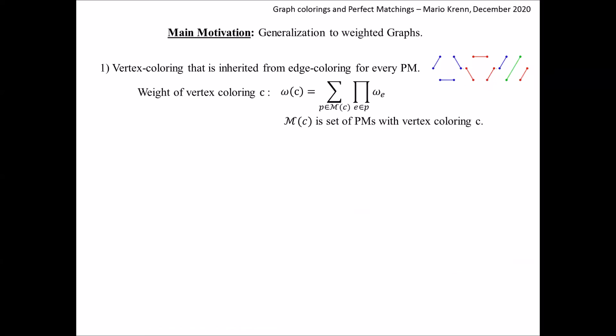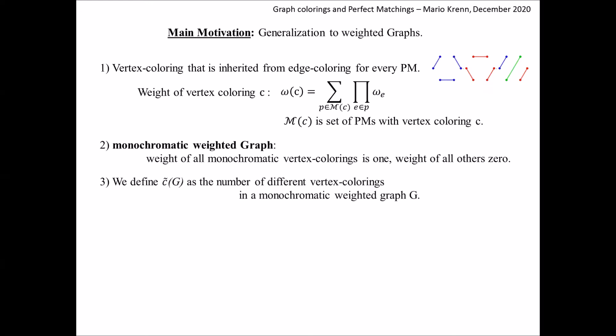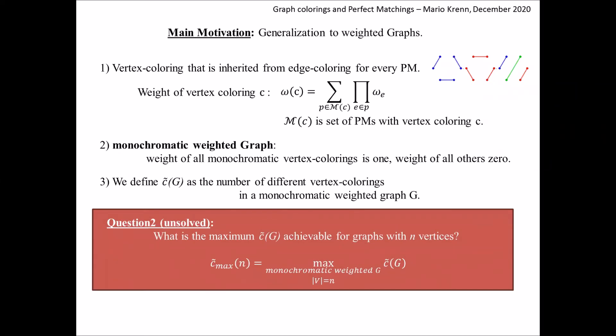We have now defined our vertex coloring and how to calculate the weight of the coloring. With that, we define monochromatic weighted graphs: a weighted graph is monochromatic if all monochromatic colorings have weight equal to 1 and all non-monochromatic colorings have a weight of 0. This allows us to define c̃(G) as the number of different vertex colorings in a monochromatic weighted graph G. Finally, we can ask our unsolved question: what is the maximum value of c̃(G) achievable with a graph with n vertices?